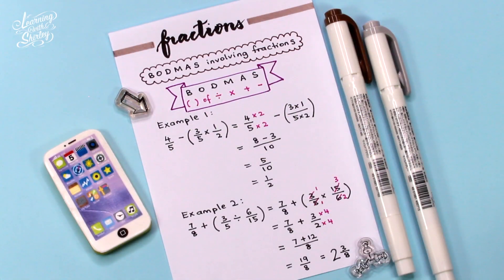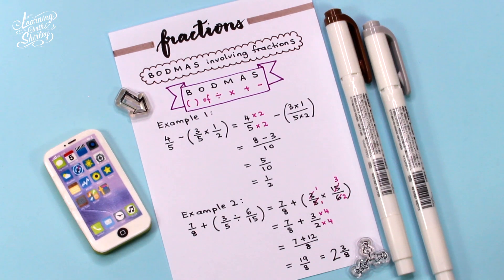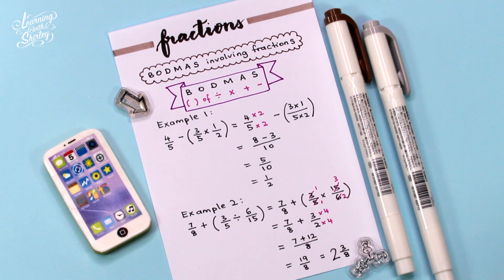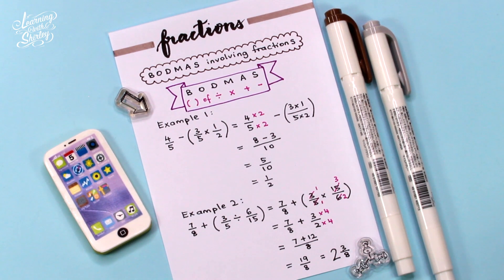How to solve BODMAS problems involving fractions? First, we need to understand what BODMAS means. B stands for Bracket, O stands for Of, D stands for Divide, M stands for Multiply, A stands for Addition, and S stands for Subtraction.